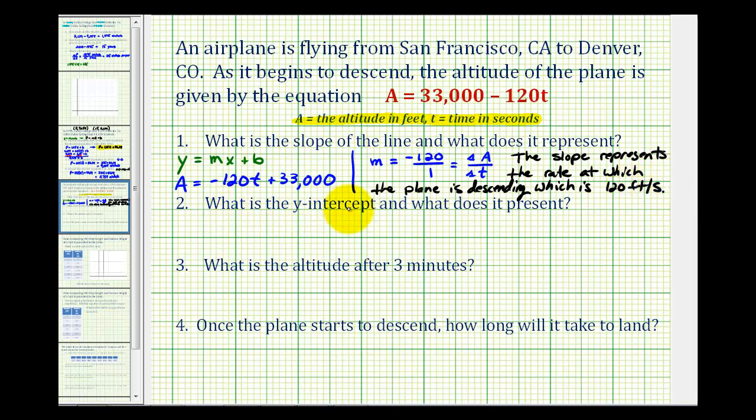Number two, what is the Y-intercept and what does it represent? Well, the Y-intercept is the value of B, so the Y-intercept equals 33,000.